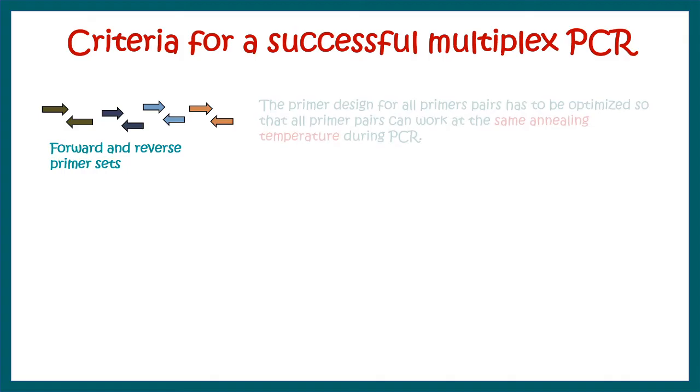First of all, the forward and reverse primer sets should have the same annealing temperature during the PCR cycle. Otherwise, some would amplify and some targets would not be amplified. That is not our goal; we want all targets to be amplified.